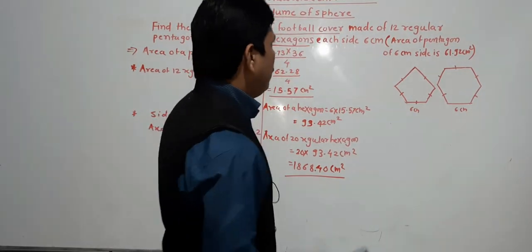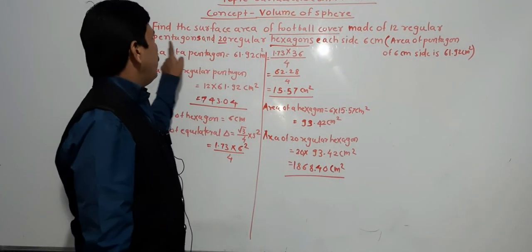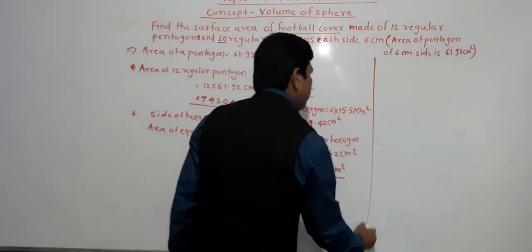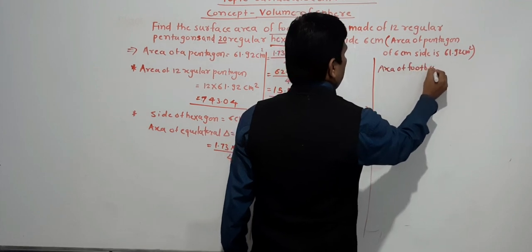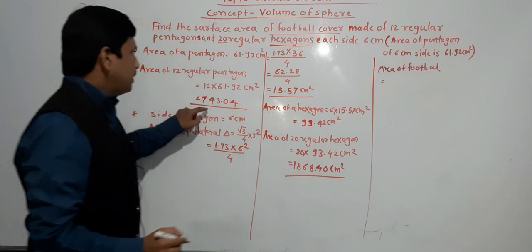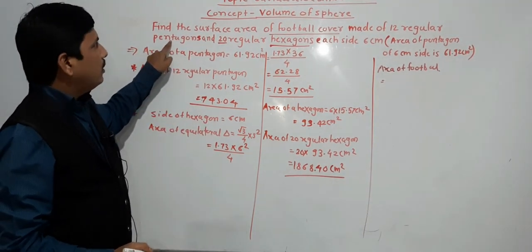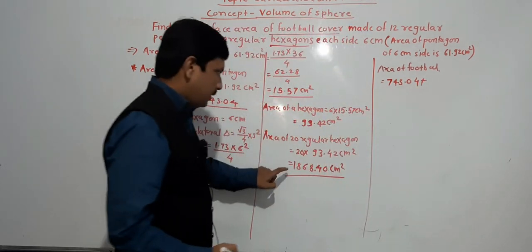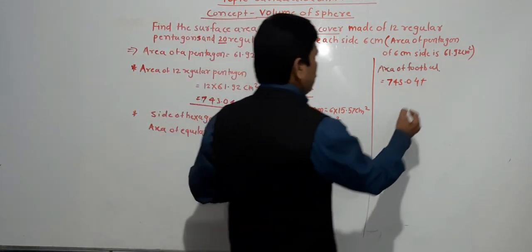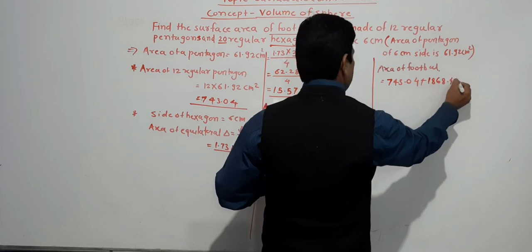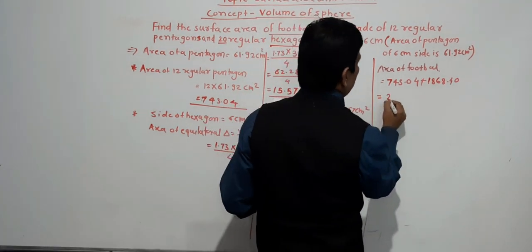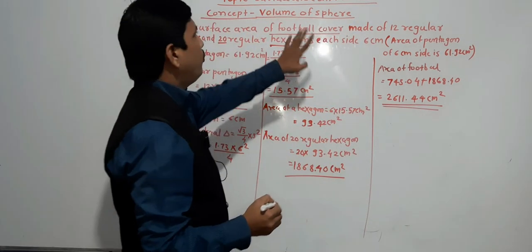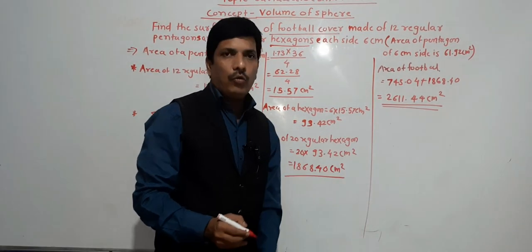Now we add the two areas to get the area of the football. The football is made of 12 regular pentagons and 20 regular hexagons. Area of football equals 743.04 (area of 12 pentagons) plus 1868.40 (area of 20 hexagons), which gives 2611.44 cm square. So the area of the football cover is 2611.44 cm square.